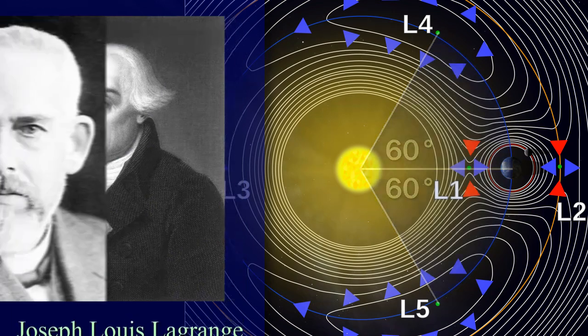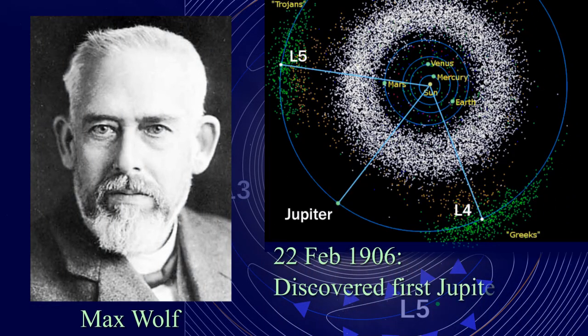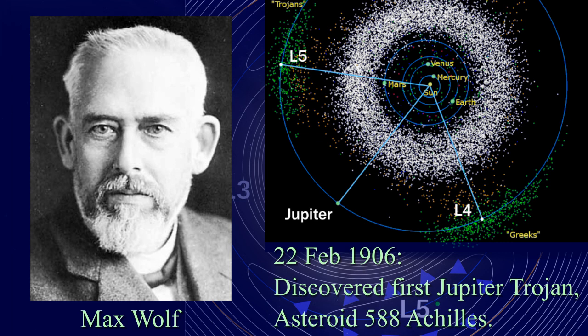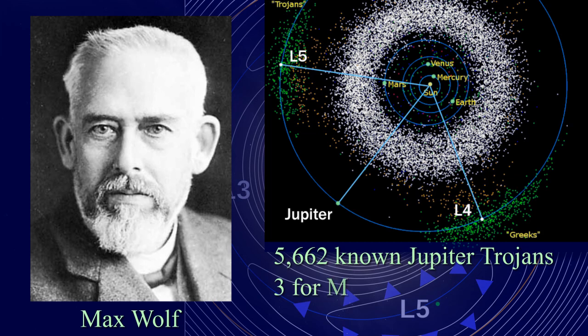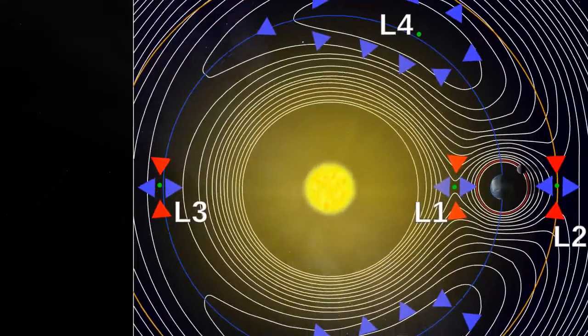In 1906, the German astronomer Max Wolff discovered asteroid 588 Achilles in the L4 region of the Sun-Jupiter system. Over 5,600 of these Trojan asteroids have been found so far for Jupiter. Three are known for Mars, and nine for Neptune.